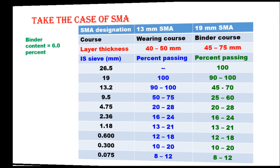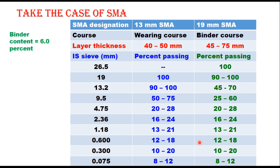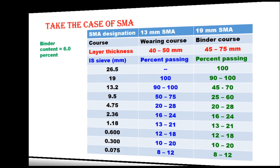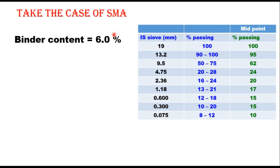Now let us take the case of Stone Matrix Asphalt. These are the two gradings given in MRTH and IRC code for 13 mm SMA and 19 mm SMA. Let us take the binder content as 6 percent — 5.8% is the minimum binder content for SMA, so we take 6% by weight of mix. Considering the first grading, the midpoint values are 90 to 195, 50 to 75 (midpoint 62), and so on.